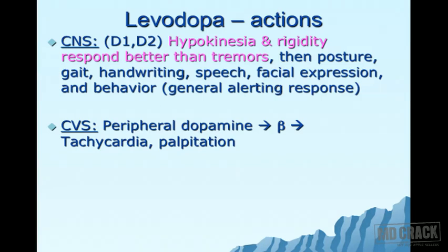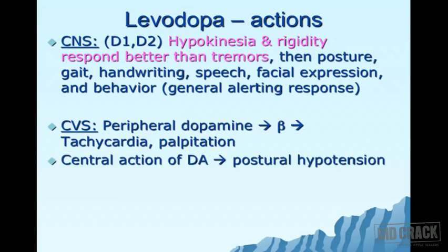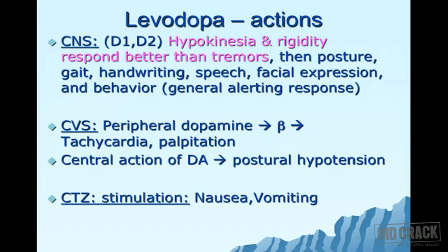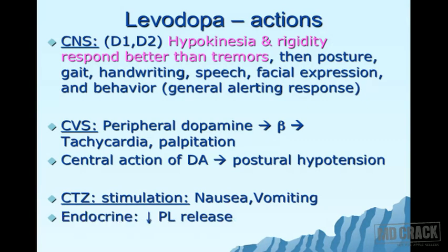On the cardiovascular system: levodopa is converted to dopamine in the periphery, which acts on beta receptors, causing tachycardia and palpitations. Centrally, dopamine leads to postural hypotension, commonly seen with levodopa. Dopamine formed in the brain also stimulates the chemoreceptor trigger zone, which lies outside the blood-brain barrier, causing nausea and vomiting.